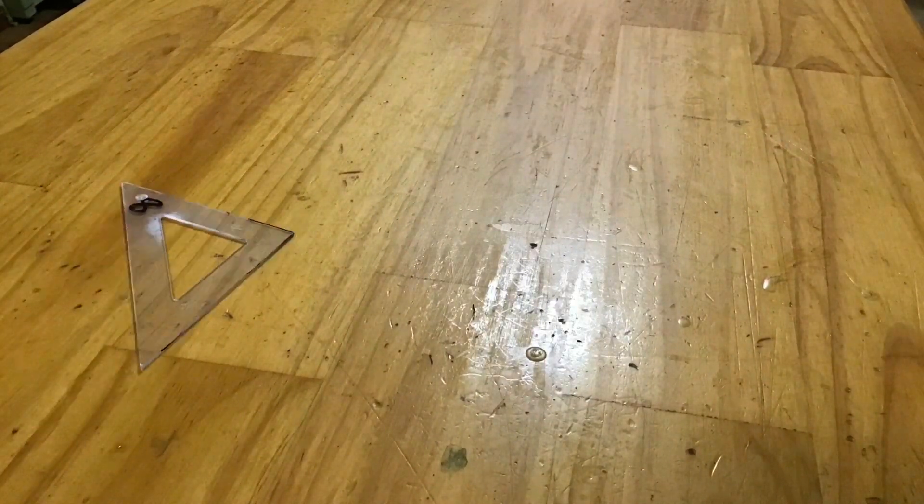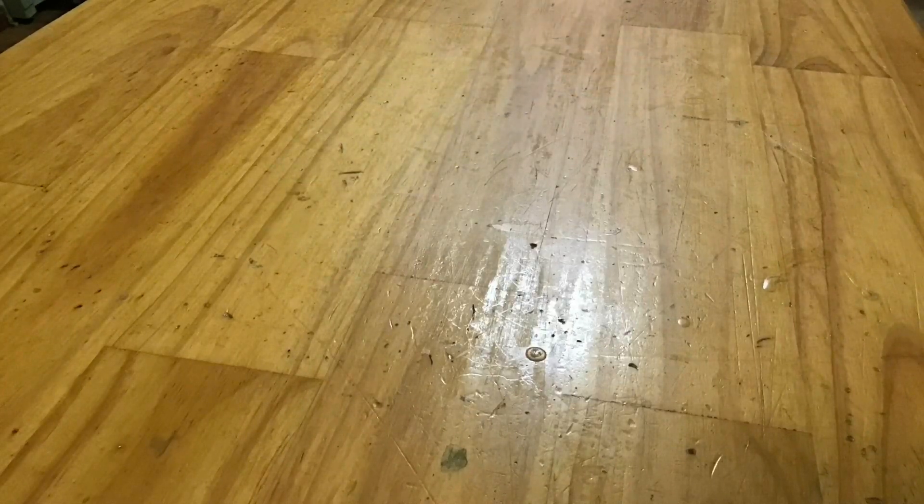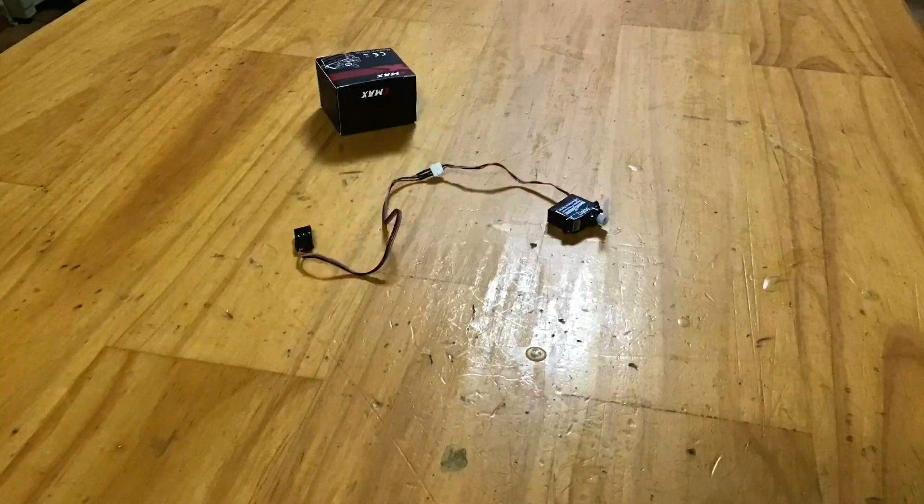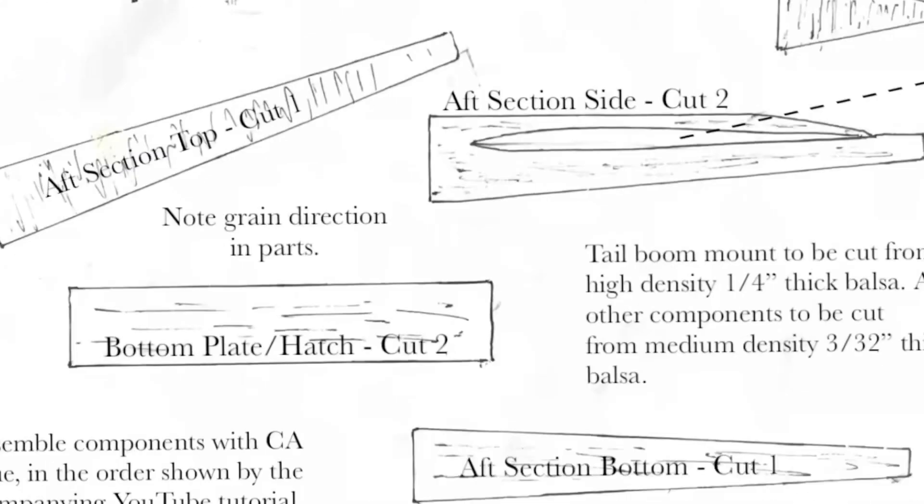You'll then need your X-Acto knife and your pen, as we used last time, along with some masking tape this time because we'll be taping down templates. A triangle is also a handy thing to have for checking that all the right angles really are 90 degrees. And of course we'll need what goes inside the fuselage, the servos. We'll be using two 2.5 gram servos.